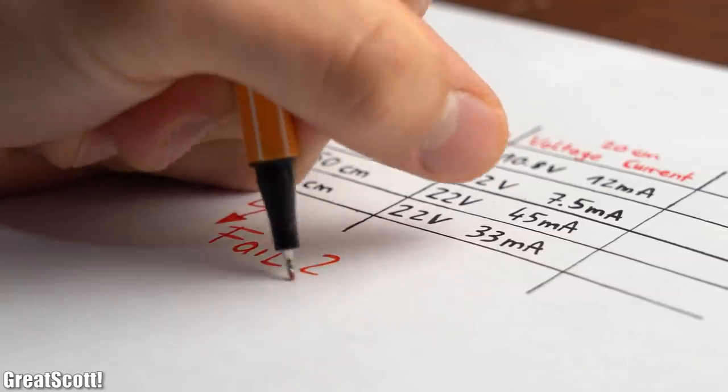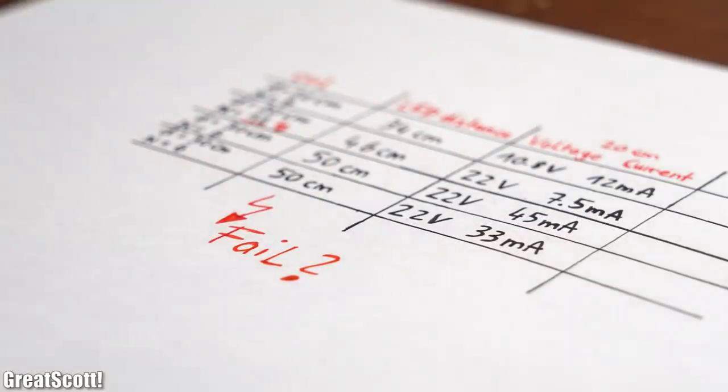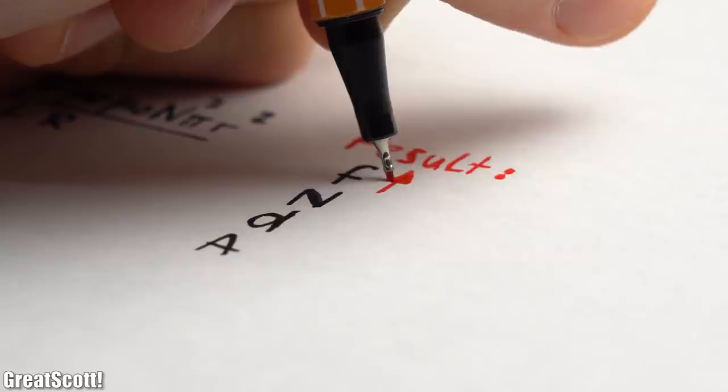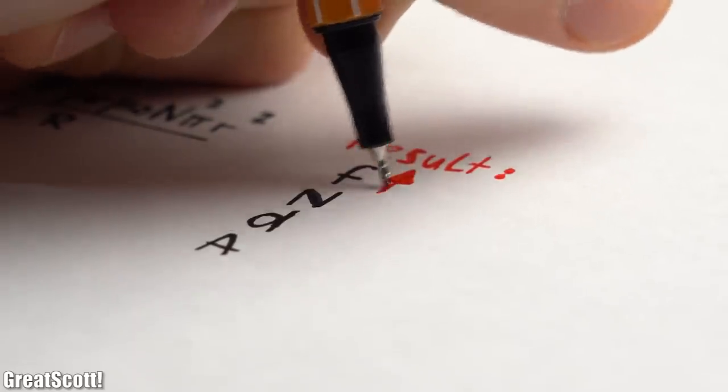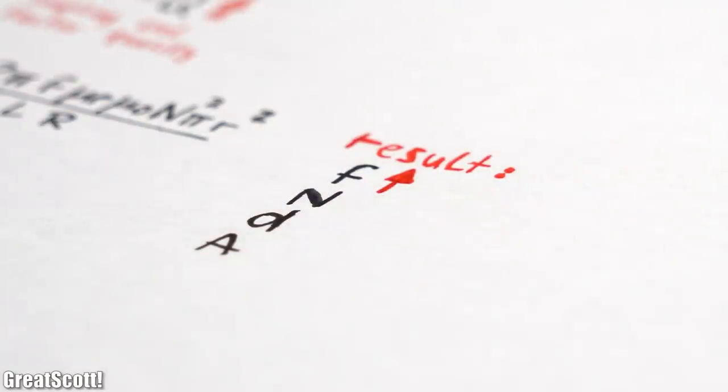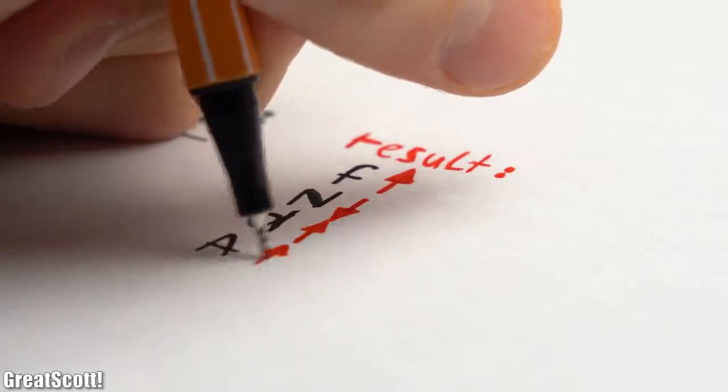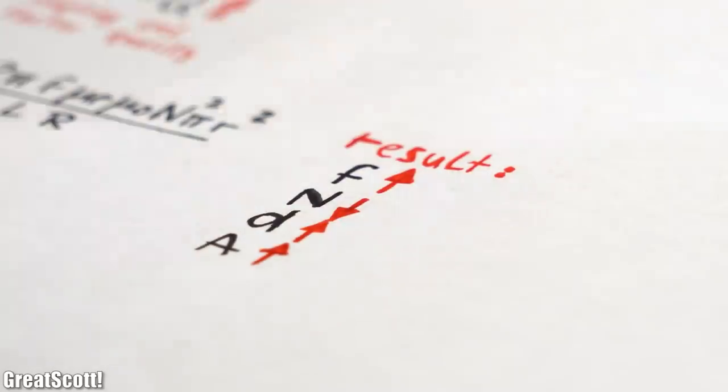So this experiment was a big fail, right? Well not really, because through those experiments we learned that a high frequency, not many windings, a big coil diameter, and a big cross section are most important for good wireless power systems.